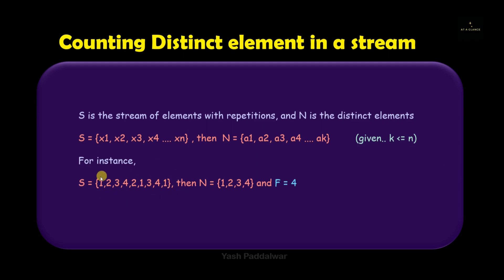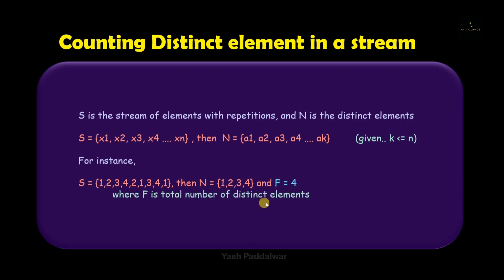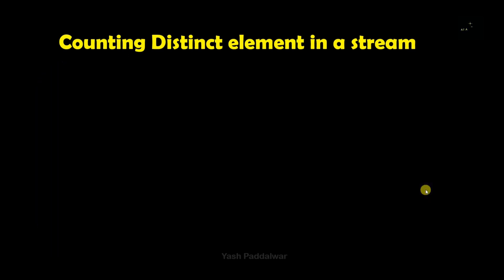Here we have taken an example. Stream S contains the elements 1, 2, 3, 4, 2, 1, 3, 4, 1. You can clearly see that the elements 1, 2, 3, 4 have got repeated more than once. And therefore, our n — which is the total number of distinct elements — will be {1, 2, 3, 4} because these are the only unique elements present inside the entire stream. The length of n is 4 because there are total 4 distinct elements present.